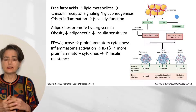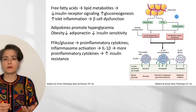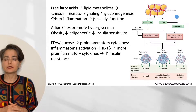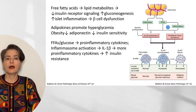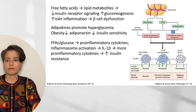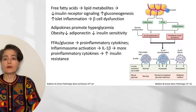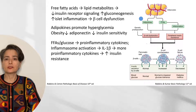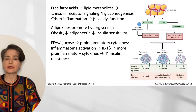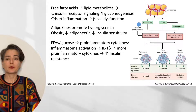When free fatty acids are released into the bloodstream, they undergo metabolism. Some become toxic lipid metabolites, which can decrease insulin receptor signaling — contributing to peripheral insulin resistance. They can also cause islet inflammation, and through that inflammatory pathway, cause beta cell dysfunction. Fat cells can also secrete a variety of hormones and cytokines called adipokines. Some of these adipokines promote hyperglycemia.